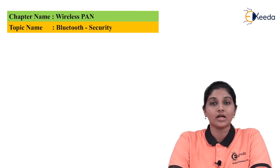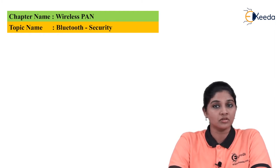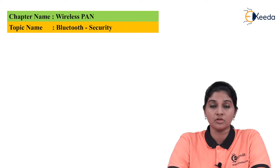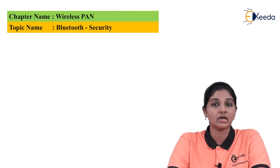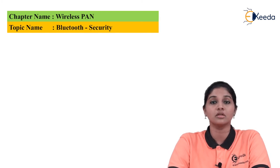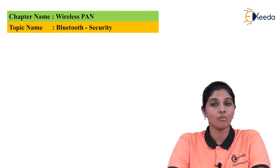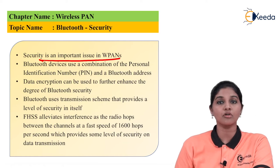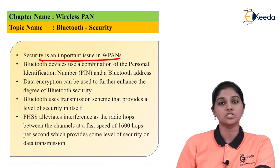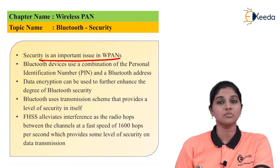In case of wireless network, data transmission takes place through a wireless medium — air is used as the interfacing medium. Because of this, it is possible that the data gets attacked by many types of attacks, reducing the integrity of the data. So in order to avoid this, security is required to protect the data. Security is an important issue in any kind of network, whether wired or wireless.